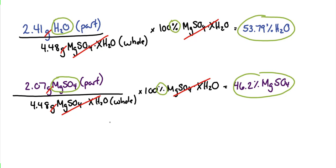Again, we could have done 100 minus 53.79% to get this remaining percent. And that's shown here. Now, because of rounding, you'll notice that I'm off by a hundredth. And that's okay.